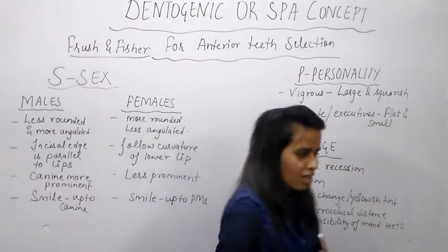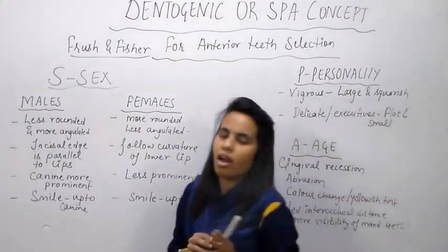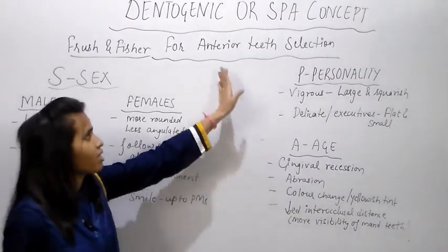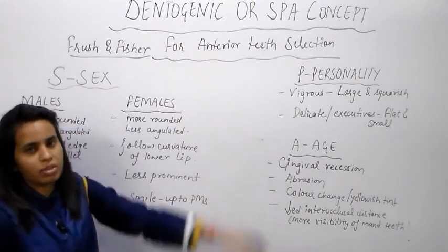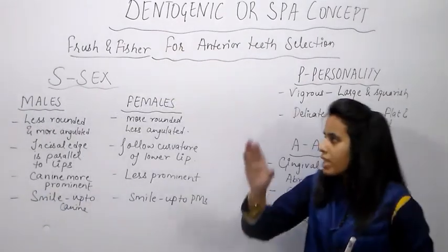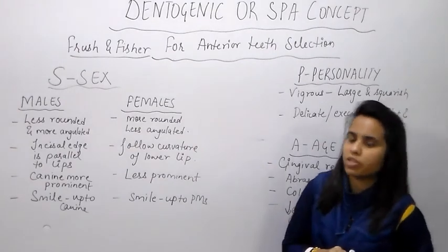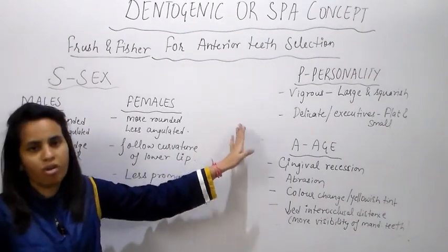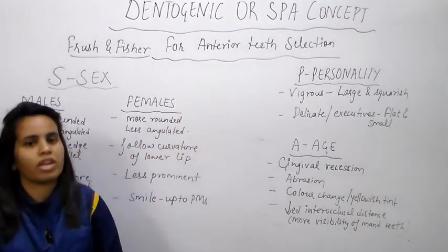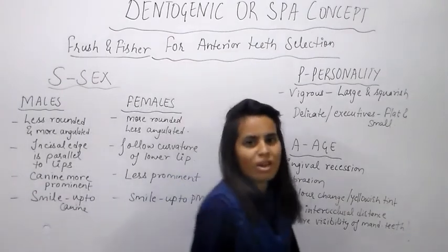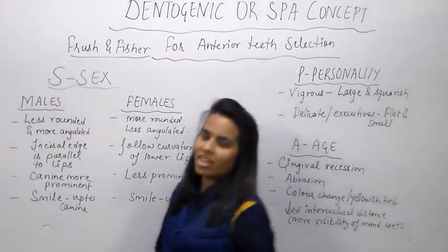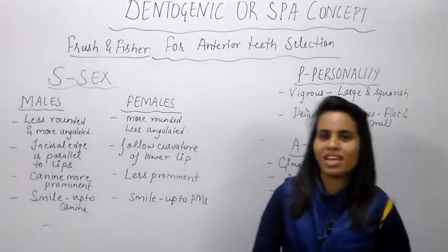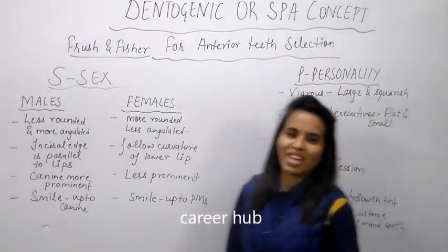So all these factors should be kept in mind, and according to these factors we should select and arrange our anterior teeth in a complete denture patient. The dentogenic concept is mainly based on sex, personality, and age of the patient, and it is a very important concept to follow for the selection and form of anterior teeth. If you have any doubts or queries you can ask in the comment box below, and please like and subscribe to our channel. Thank you.